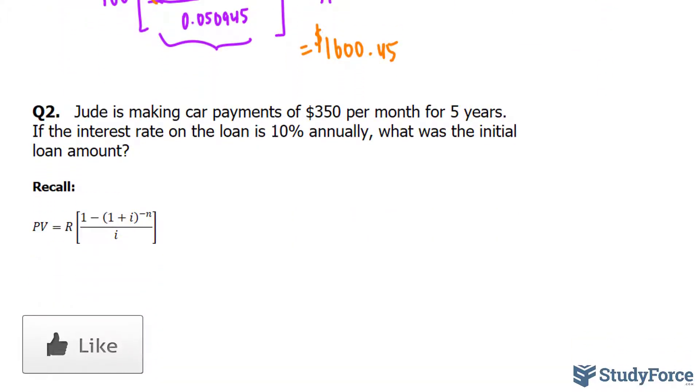In question 2, Jude is making car payments of $350 per month for 5 years. If the interest rate on the loan is 10% annually, that's important. What was the initial loan amount? We are making monthly payments, but the interest is compounded annually at 10%. We need to convert that to monthly.